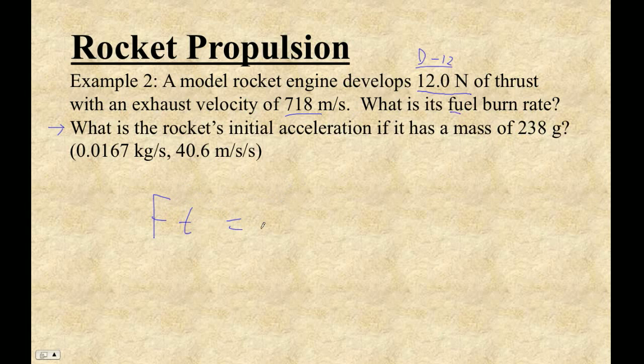Let's figure this out. Let's go force times time is mass change in velocity. Now, if you want the fuel burn rate, that is the kilograms in one second. So make your time one second. And then the mass is what we're trying to solve for. The mass that it burns in one second will be the burn rate. This is 718 meters per second. And then the force is 12 newtons. So 12 divided by 718. So you can see, if this is a bigger exhaust velocity, then that will be a smaller mass burn rate. So the mass I'm getting in one second is 0.016713 kilograms per second.